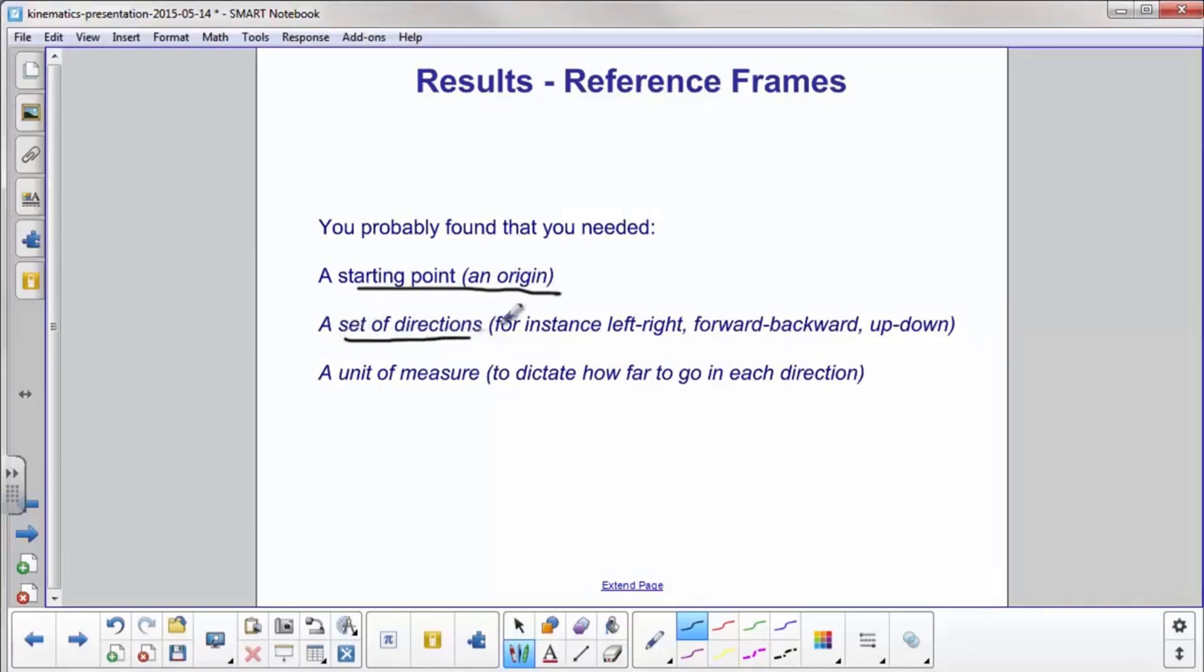Second, you needed a set of directions. For example, you could have told the student to go left, forward, backward, up, down, right. Many different ways to talk about directions. And third, you needed a unit of measure. We talked earlier in the chapter about how we're going to use meters for distance. Perhaps in this case, your unit of measure might have been a step, a couple steps, a pace, or you could have said walk ten meters, and hopefully they had a meter stick to use.